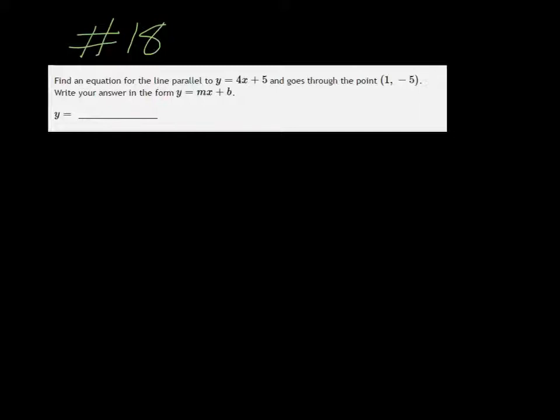So parallel means that it's going to have the same slope, and the slope of the equation given is 4, so the slope of our new line is also going to be 4. So we have a slope and a point.